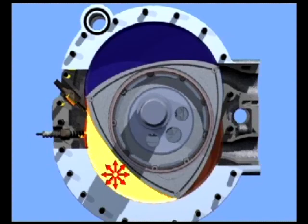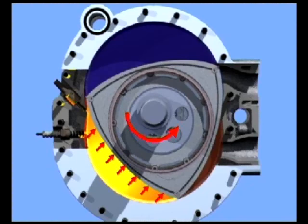Then comes the third stroke, the expansion stroke. Here, the ignited mixture exerts pressure on all sides of the combustion chamber. The side created by the rotor is hereby forced to move to allow the mixture to expand, forcing the eccentric shaft to rotate. This rotation of the shaft is then the driving power of the motor.